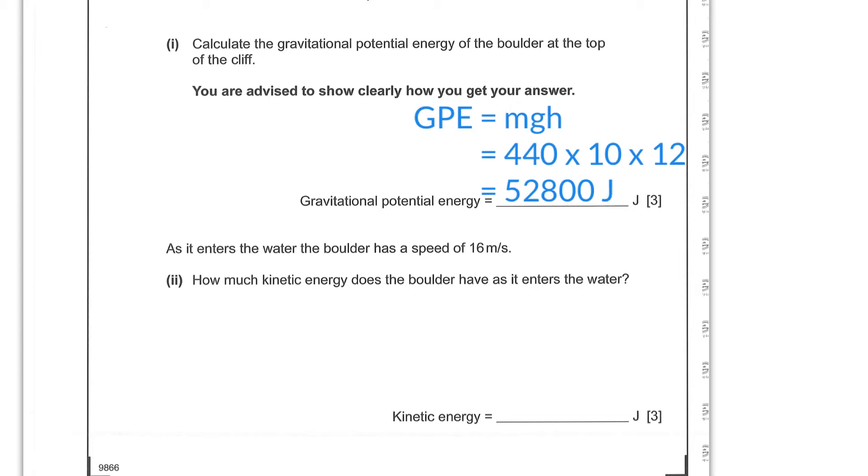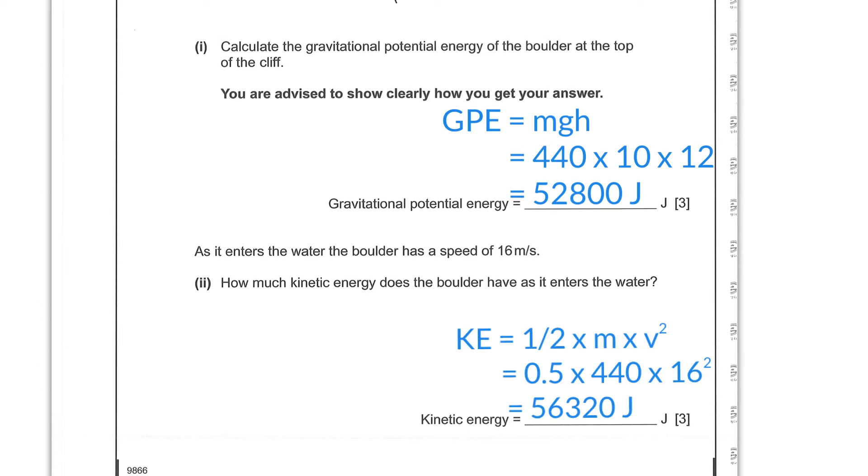As it enters the water, the boulder has a speed of 16 meters per second. How much kinetic energy does the boulder have as it enters the water? So that's just another straight out of your notes. Kinetic energy is a half mv squared. So KE is a half mv squared: 0.5 times 440 times 16 squared gives you 56,320 joules.